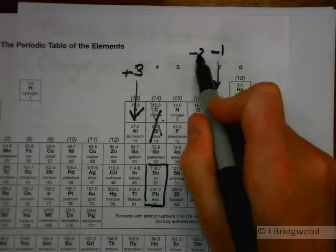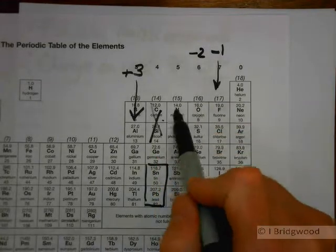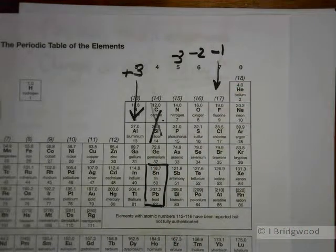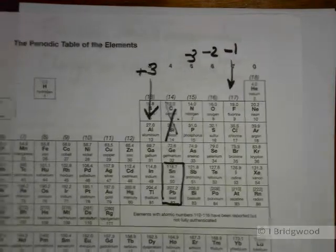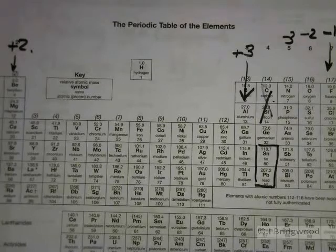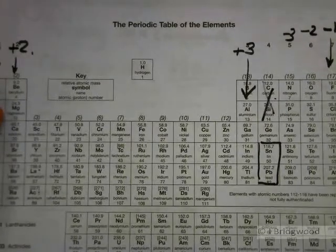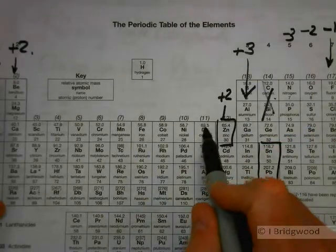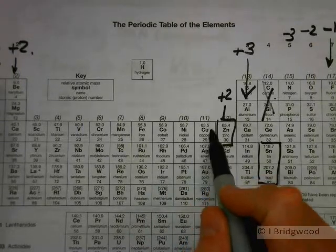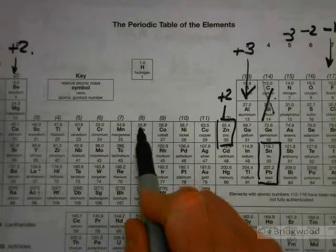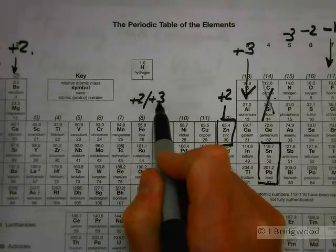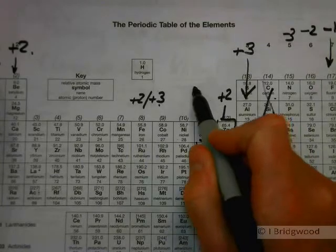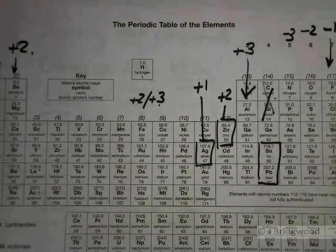Group six has six electrons in its outermost shell, tends toward noble gas configuration, giving a negative two charge. Following the same pattern, group five gives a minus three charge. There are problems with the transition elements though — these you need to learn: zinc tends to form a plus two ion, copper tends to form a plus two ion (though a plus one is also possible), iron can be plus two or plus three, and silver is an important one — that's plus one.